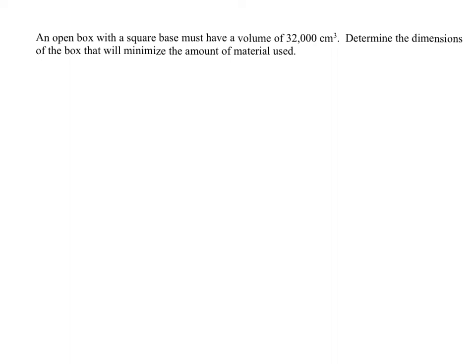An open box with a square base must have a volume of 32,000 cubic centimeters. Determine the dimensions of the box that will minimize the amount of material used. The goal in this problem is to find a minimum — we want to minimize the amount of material used. If we were making this box out of cardboard, the amount of cardboard used would be measured as surface area. So we're really trying to minimize the surface area. That's our goal.